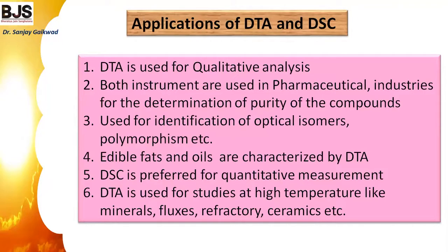Applications of DTA and DSC include: qualitative analysis; determination of purity of compounds in pharmaceutical industries; identification of optical isomers and polymorphism; and characterization of edible fats and oils. DSC is preferred for quantitative measurements requiring precise heat quantities. DTA is used for studies at high temperatures, such as mineral fluxes and refractory ceramics, where temperatures may reach from 1500 up to 3000 degrees Celsius — temperatures unsuitable for TGA or DSC.